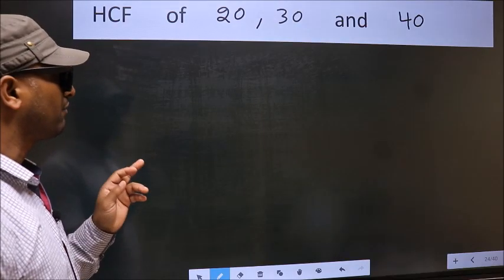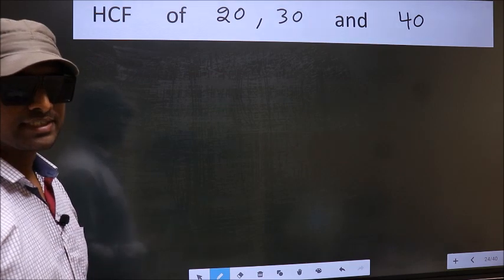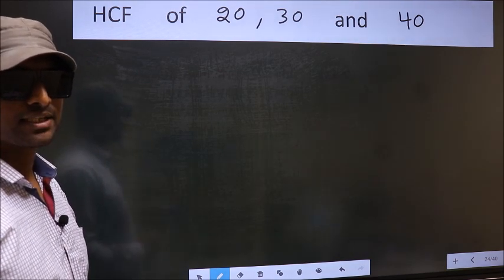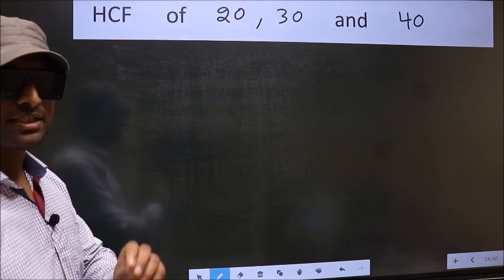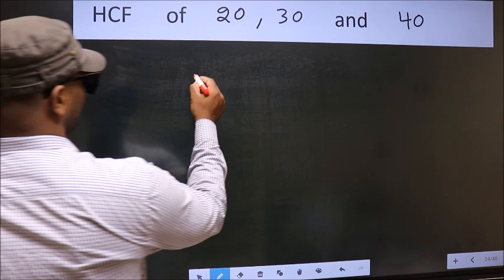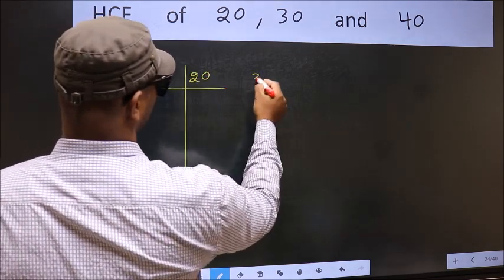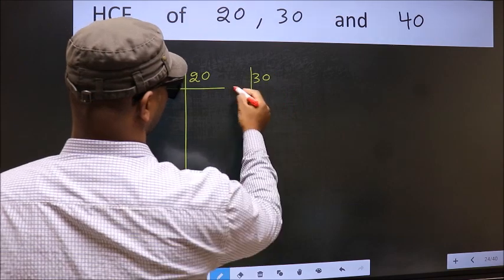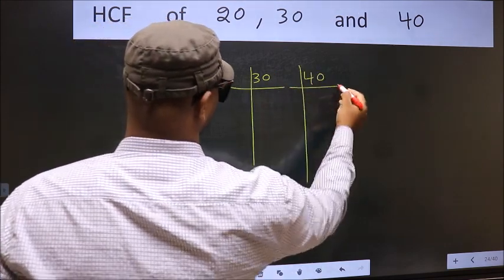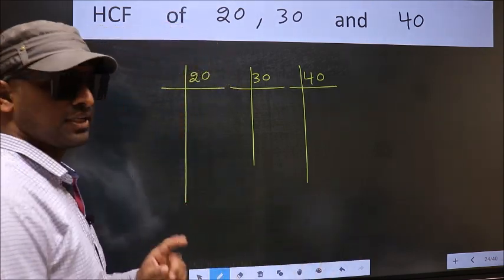HCF of 20, 30, and 40. To find the HCF, we should do the prime factorization of each number separately. That means 20, 30, 40. This is Step 1.